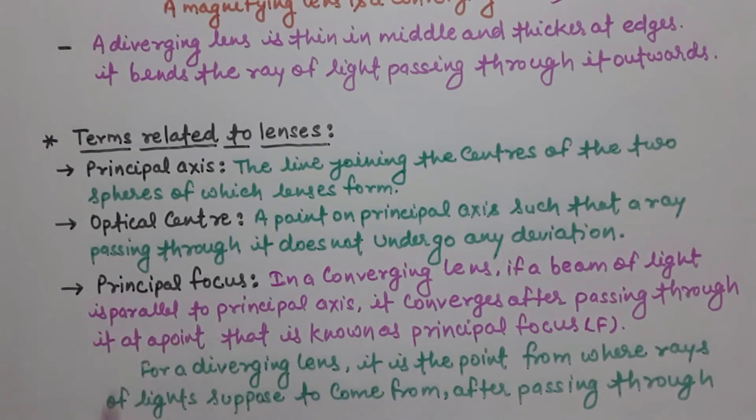A ray passing through the point on principal axis such that a ray passing through it does not undergo any deviation. That's the point we call optical center.